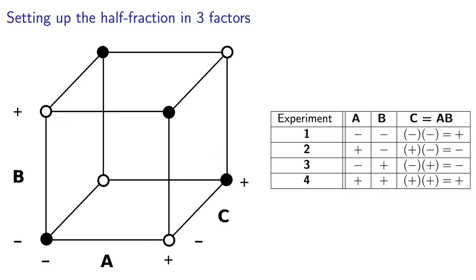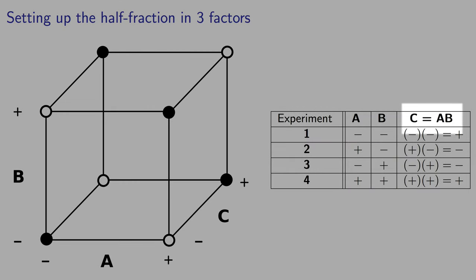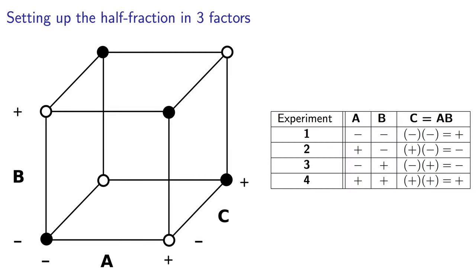In the previous video, I showed you a process where we selected half the number of experiments and I used a rule where c equals a times b. Now we shouldn't automatically use these rules. Let me show you where I obtained it from.